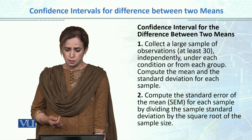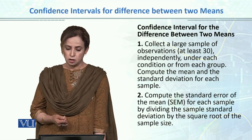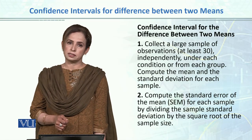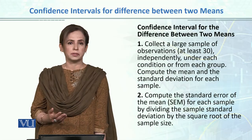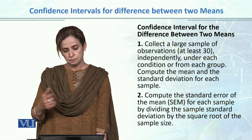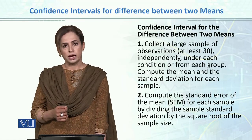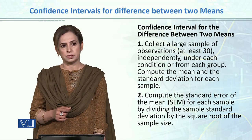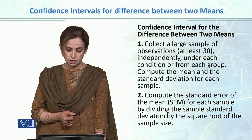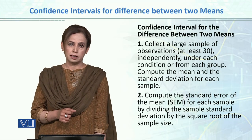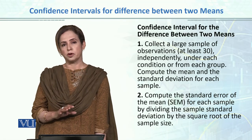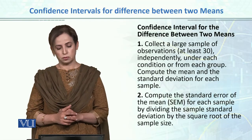Independently, under each condition or from each group, collect observations and compute the mean and standard deviation for each sample. Then compute the standard error for both groups using the formula: sigma over square root of n.